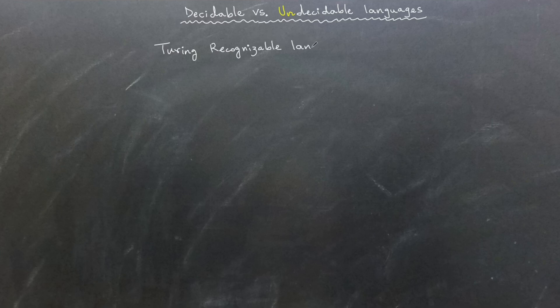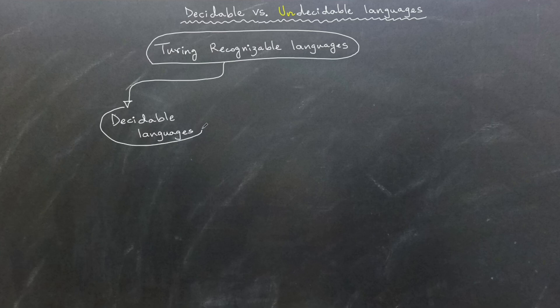We have also discussed how our Turing machine, when given an input, can either accept it, reject it, or enter an infinite loop without reaching a decision. This behavior allows us to classify Turing recognizable languages into two broad categories: decidable and undecidable languages.